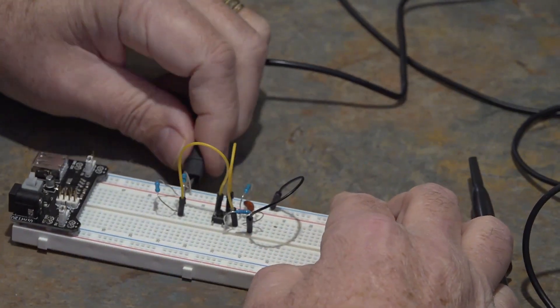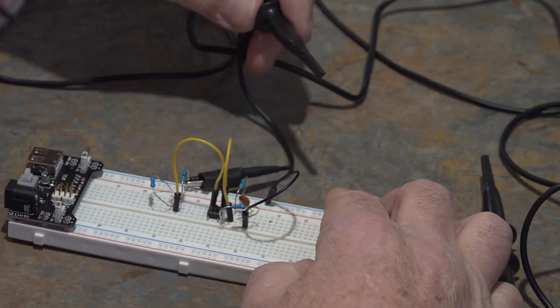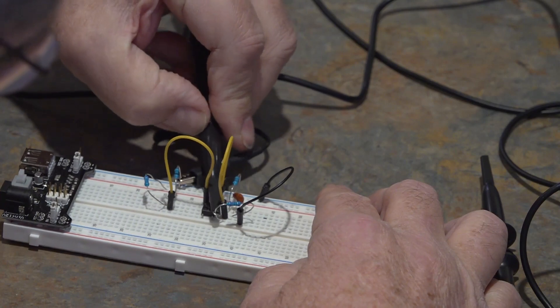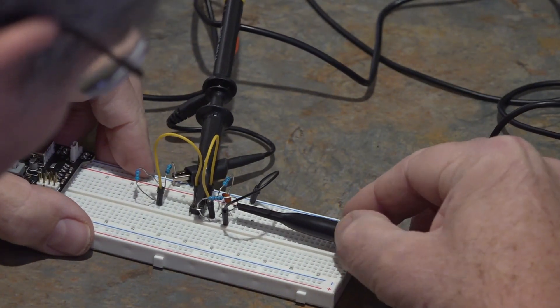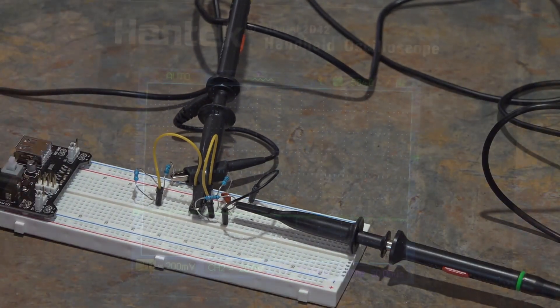Now I just need to hook up my scope probes. I hook up my ground for one probe - and like I said before, the grounds are common - and this is going to go on one side of the switch, and the other one is going to go across the capacitor.